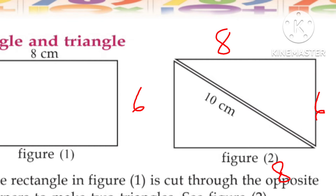The length is 8 cm, the breadth is 6 cm. Now let's see how to find the perimeter of one triangle in figure 1.